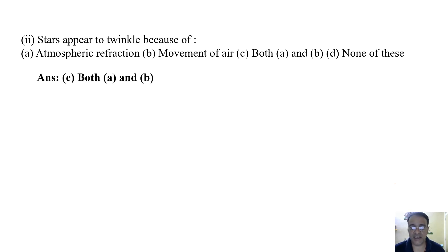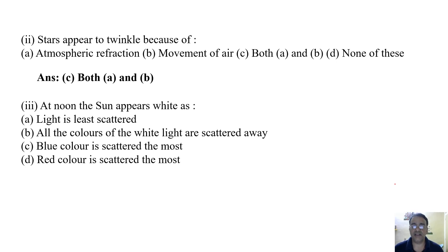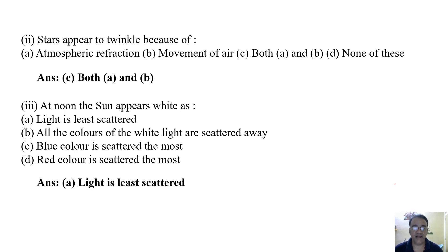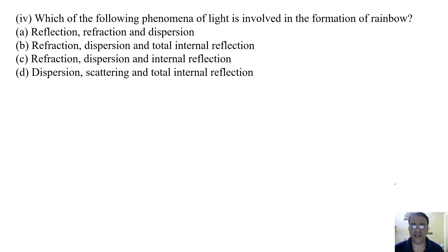The third question: at noon, the Sun appears white because — light is least scattered, all colors of white light are scattered away, blue color is scattered the most, or red color is scattered the most? The correct answer is that light is least scattered at noon.